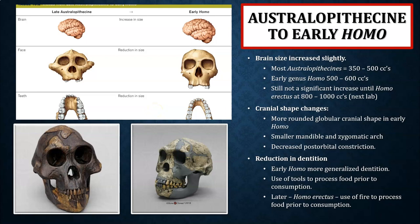This is the continuation of our presentation on the australopithecines and early members of genus Homo. This will correlate with chapter 10 in the Explorations textbook, chapter 10 in the Essentials textbook, and also goes along with lab number 15 in the Biological Anthropology lab manual.